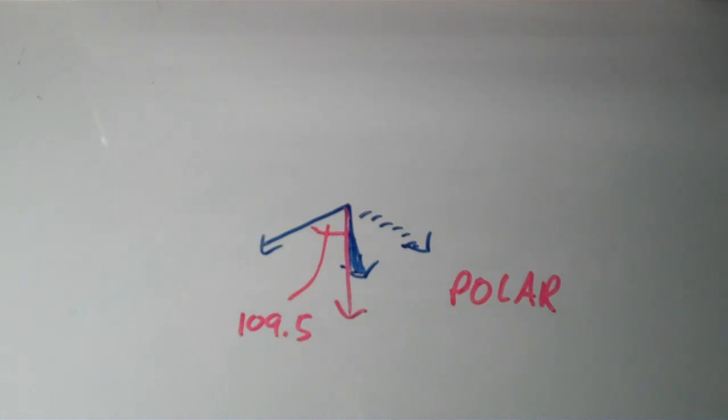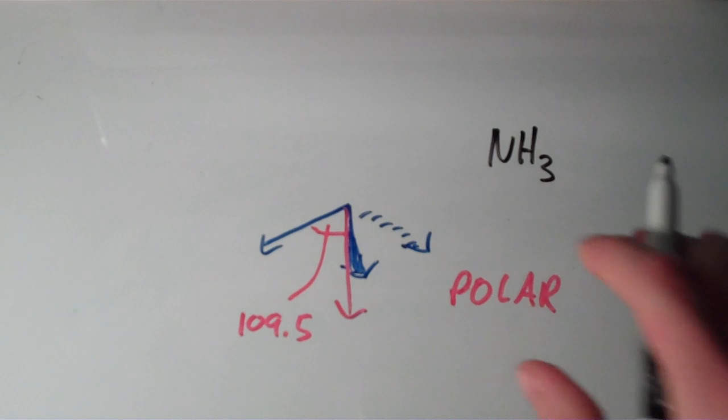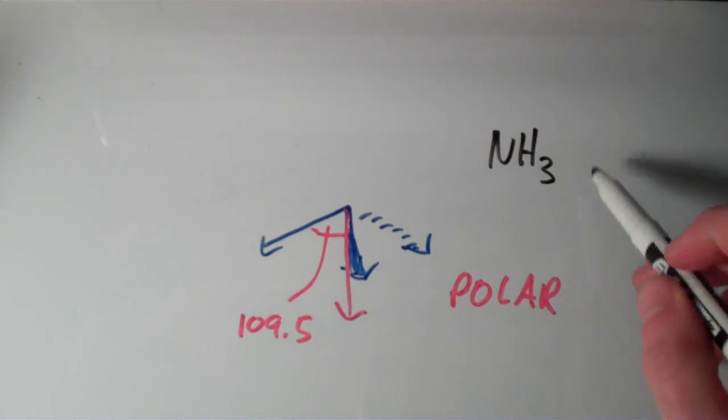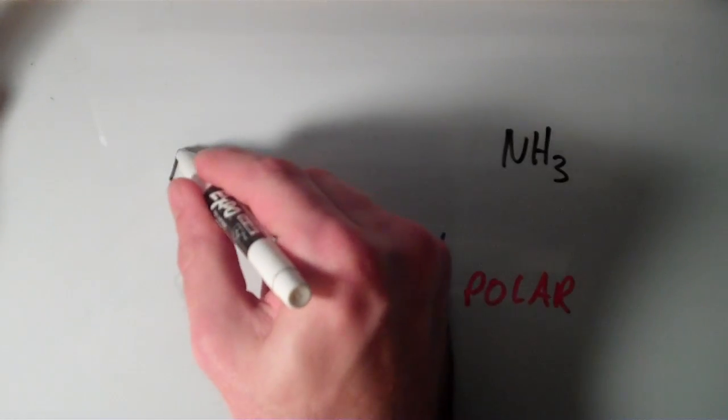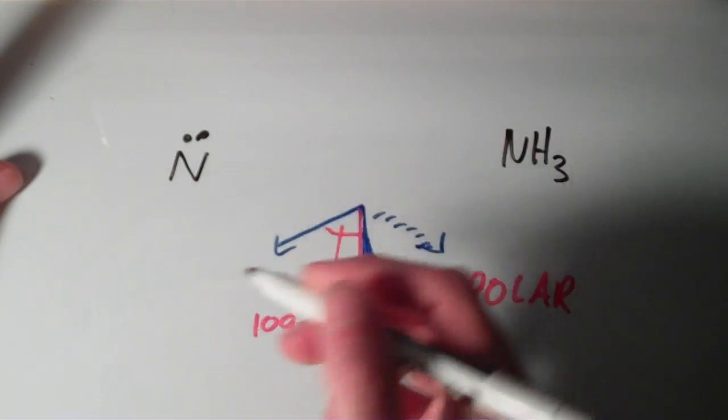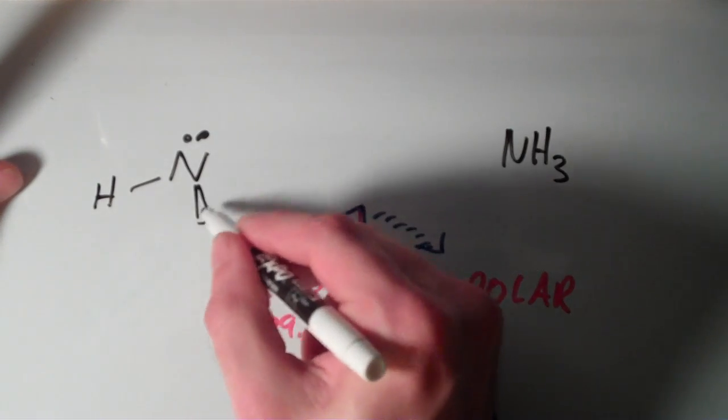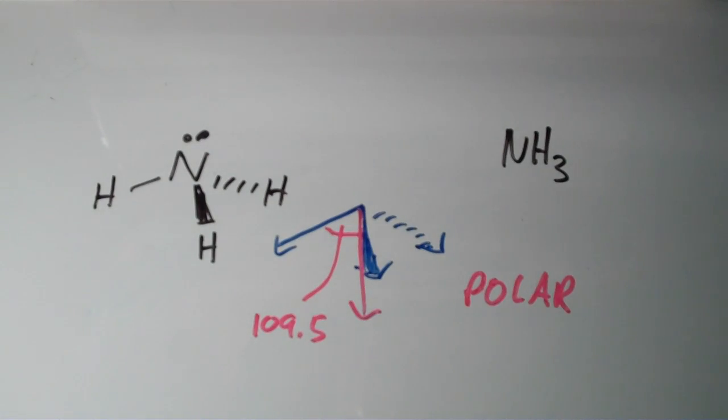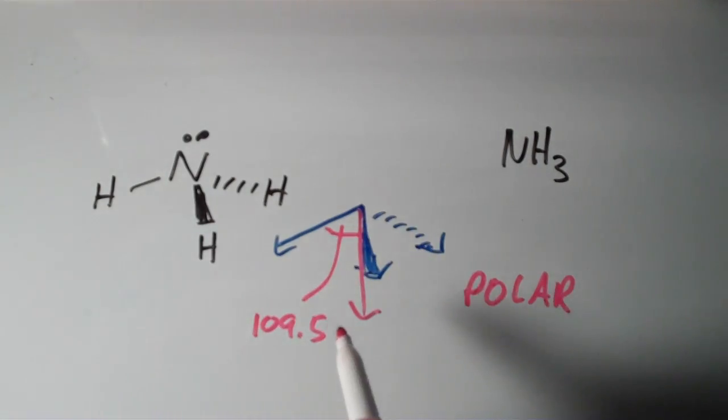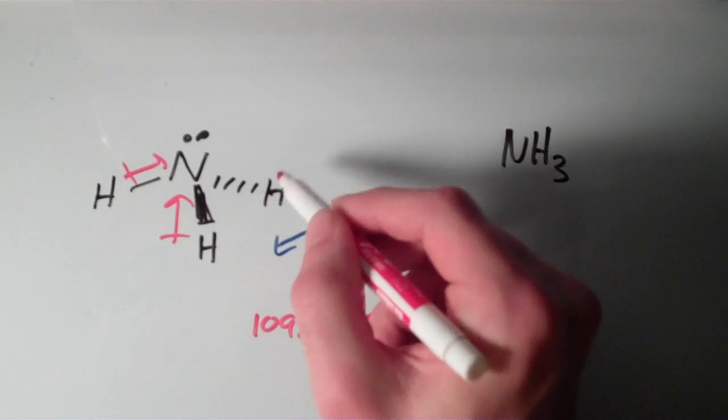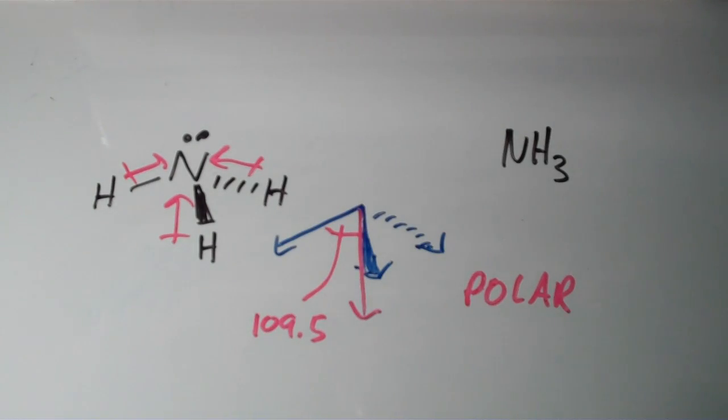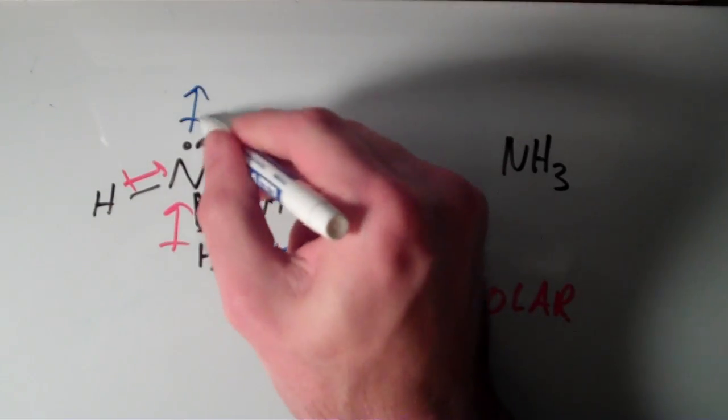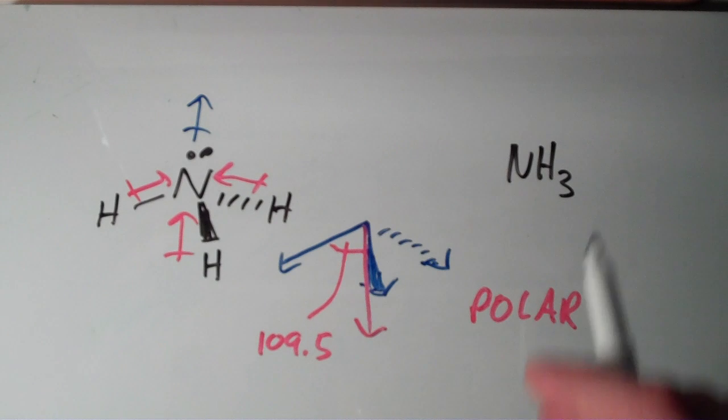An example would be ammonia, NH3. If you do the Lewis structure for ammonia, then it will become apparent that not only does that nitrogen have three hydrogens on it, but it also has a lone pair. So the molecular geometry of NH3, what does that look like? You've got your nitrogen in the middle, your lone pair, and then your three hydrogens are going to go trigonal pyramidal. And let's see, nitrogen is the more electronegative atom, so they're all going to point in this direction. And overall, your dipole is going to point that way, and thus NH3 is a polar molecule.